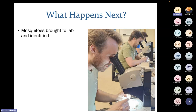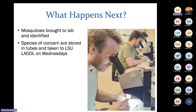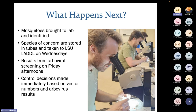After running our traps at the beginning of the week, we bring them back to our lab where they are identified to the species level. Species of concern are stored in tubes and taken to the state lab at LSU's campus on Wednesday. We receive arbovirus screening results on Friday afternoons. Critically, our control decisions are made immediately based on not only the number of vectors we see but also the arbovirus results — we get our results and respond right away.